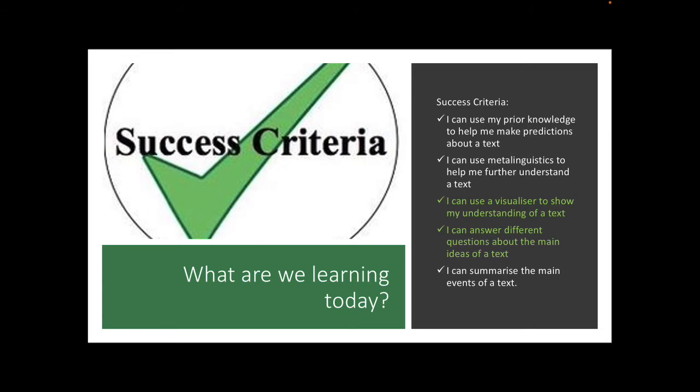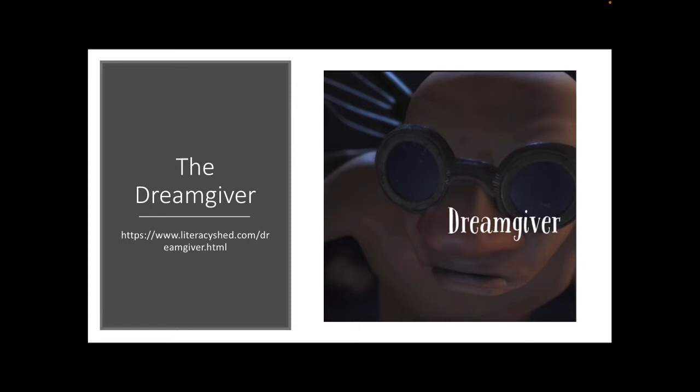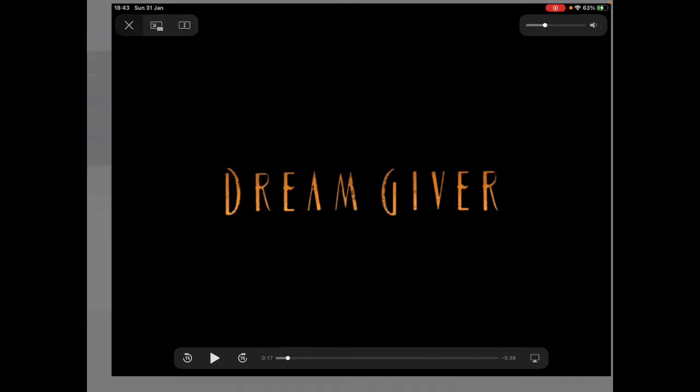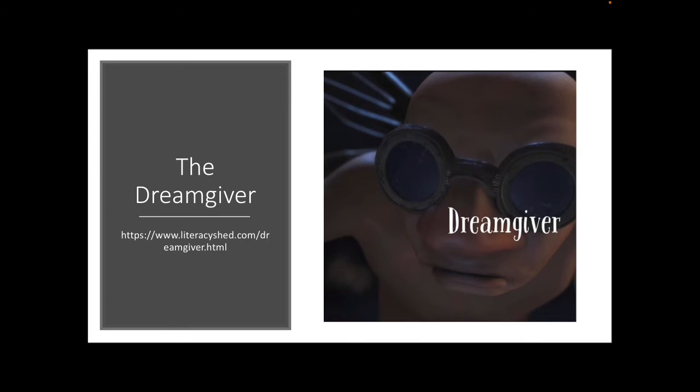Our next success criteria boys and girls is I can use a visualiser to show my understanding of a text. And I can answer different questions about the main ideas of a text. So it's time now boys and girls for you to follow the link in the PowerPoint to watch the short movie, The Dream Giver. So you go ahead and you pause this video, you follow that link and you watch this clip very carefully.